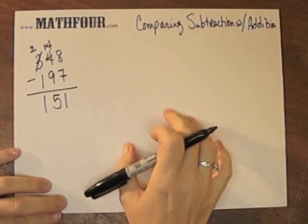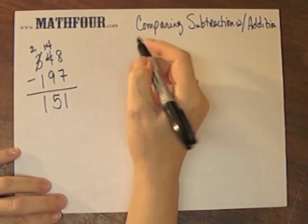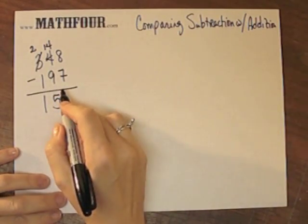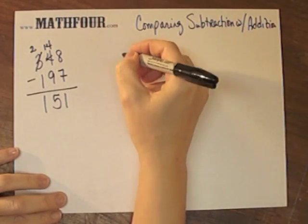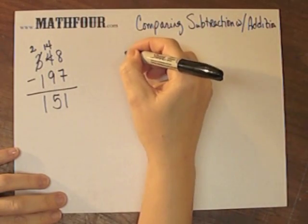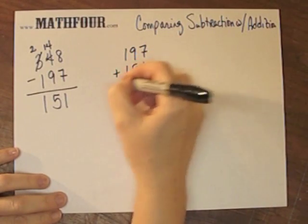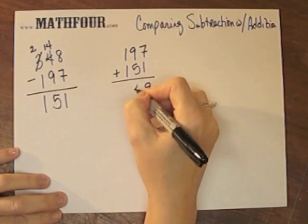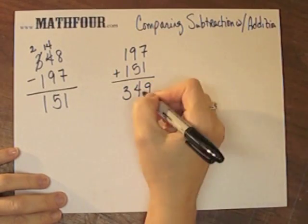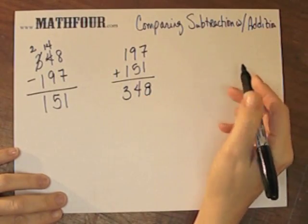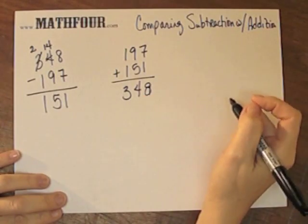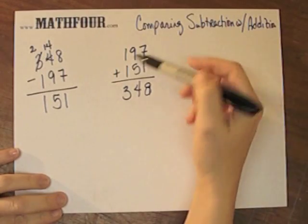Comparing this to addition, well what does this mean? This means 197 plus 151 is... 340? 348? Yeah, would help if I could add the digits correctly. So 197